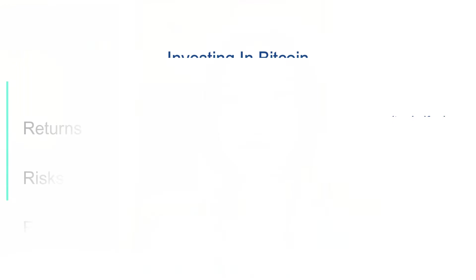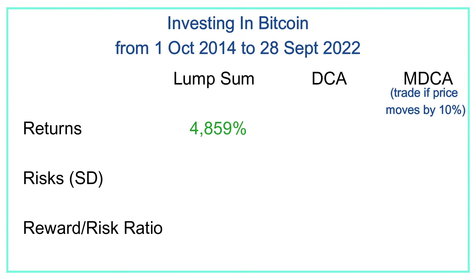I would like to give a special thanks to my friend and collaborator Dr. Chuck Shakrapani for bringing me the idea of this particular investment strategy called the Money Spinner. I certainly took a lot of inspiration from his idea and produced some very interesting results. Now let's look at some numbers. With the lump sum investment strategy, your return would be 4,859% after eight years. With standard DCA, your return would be 1,666%, and with Movement-Based DCA, your return would be 353%.